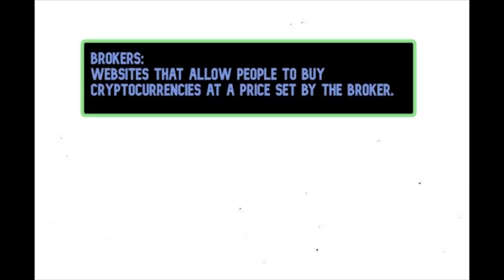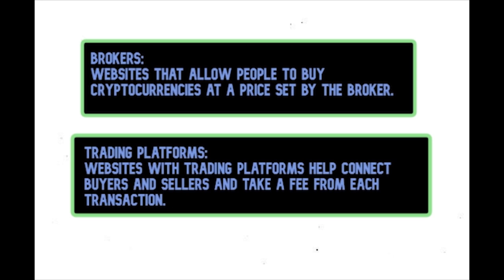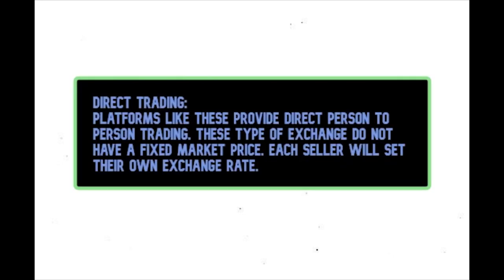There are three different types of exchanges. Number one, brokers — websites that allow people to buy cryptocurrencies at a price set by the broker. Number two, trading platforms — websites that connect buyers and sellers and take a fee from each transaction. Number three, direct trading — platforms that provide direct person-to-person trading. These types of exchanges do not have a fixed market price; each seller sets their own exchange rate.